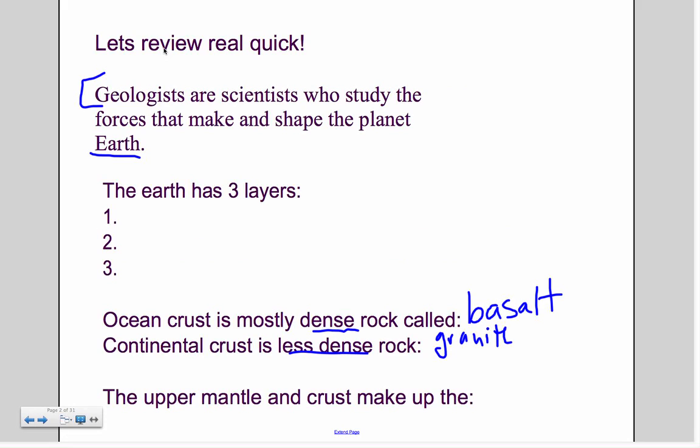The ocean crust is really dense and it's made out of a rock called basalt, and continental crust is less dense and it's made out of granite.